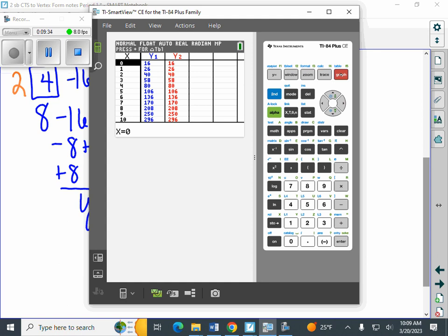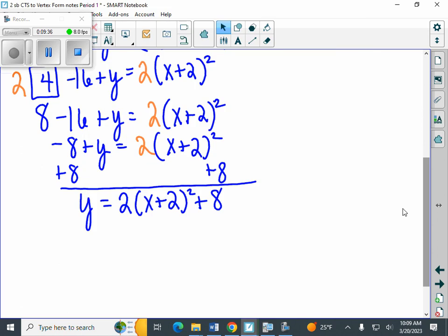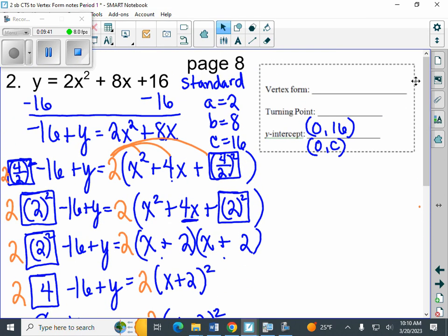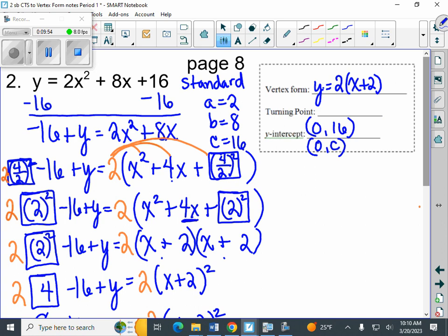Now we can go ahead and finish filling out the box. So we're going to go back up here and we're going to type in our y equals 2 times x plus 2 squared and then I think it's plus 8.